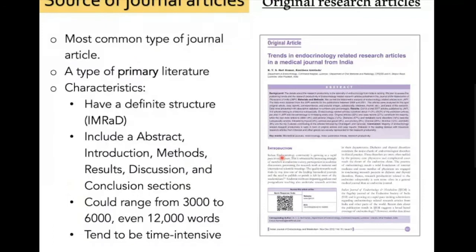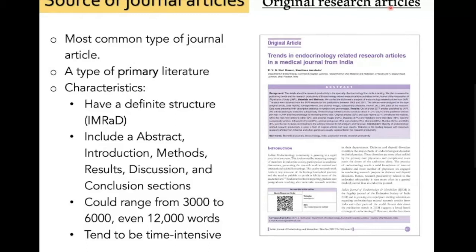There are various sources of journal articles. The most common one, which you likely use in your literature search, is the original research article. You can see from the front page it states the type — 'original article' — so you know this is primary literature, which has new data in it. Its characteristic is a definite structure. You are already familiar with IMRAD: it has the structure of abstract, introduction, method, result, discussion, and conclusion sections.